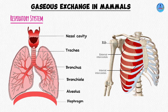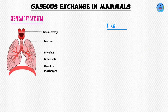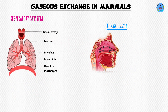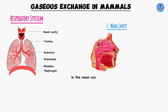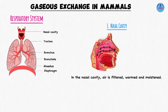Let us mention how these structures are adapted to their function, starting with the nose. The nose has two openings called the nostrils. It is through these openings that air passes into our body. As air moves across the nasal cavity, it is filtered, warmed, and moistened. Let us discuss how these three activities take place and why they are important.